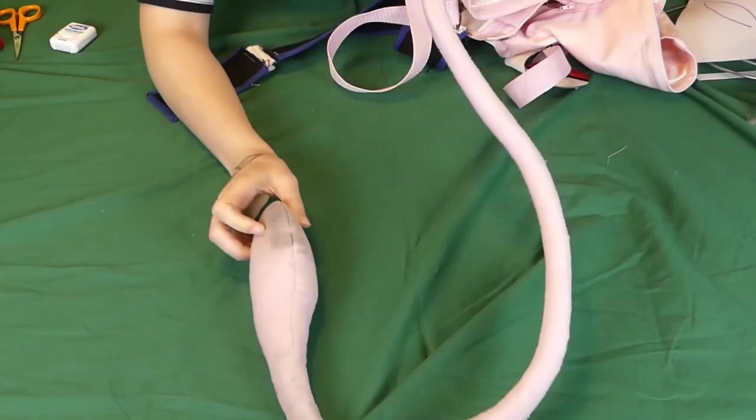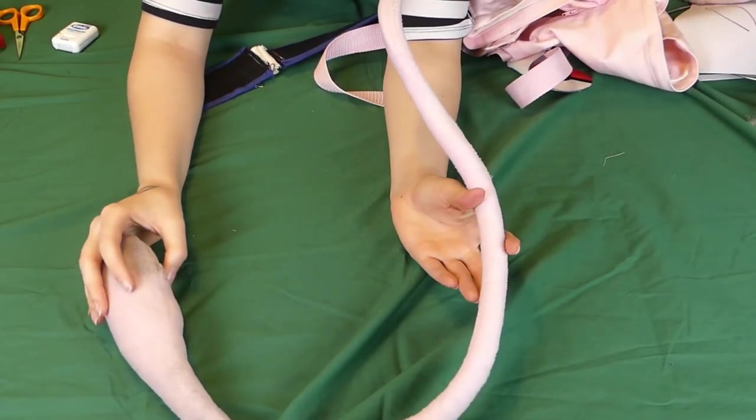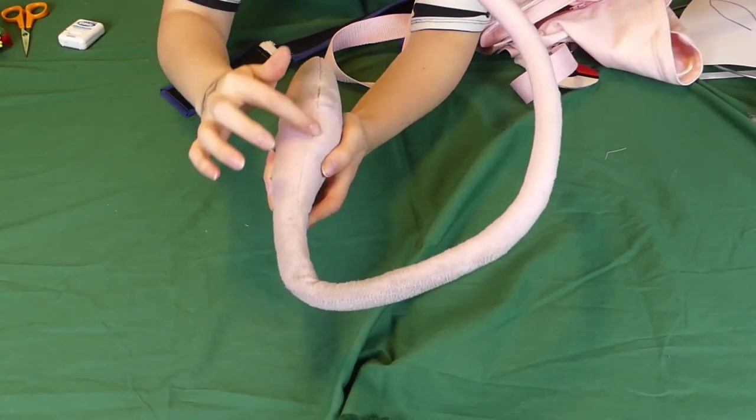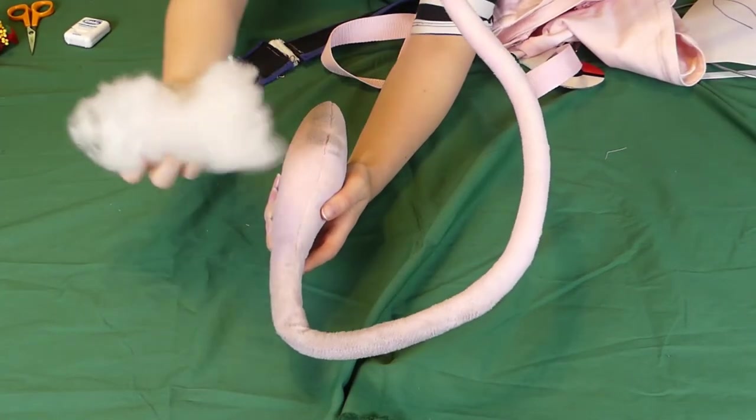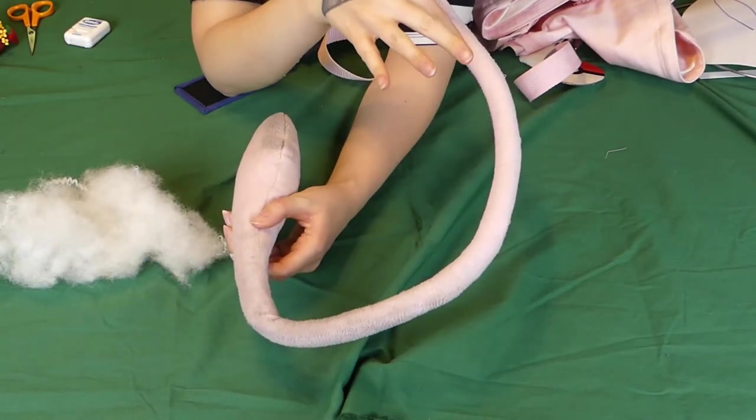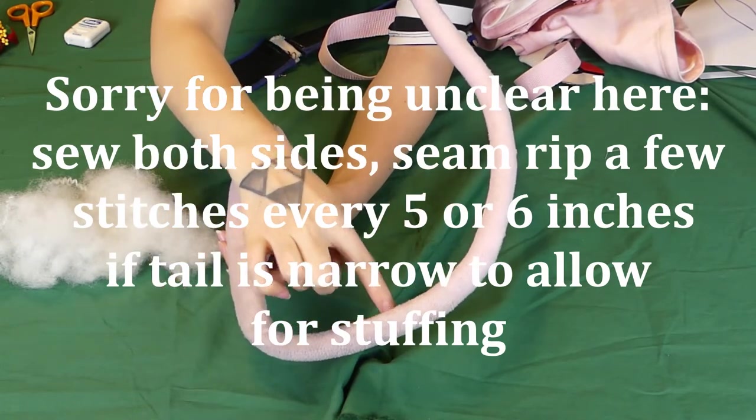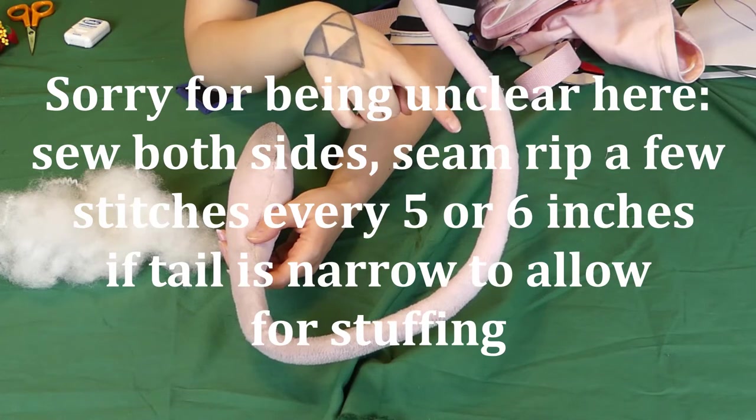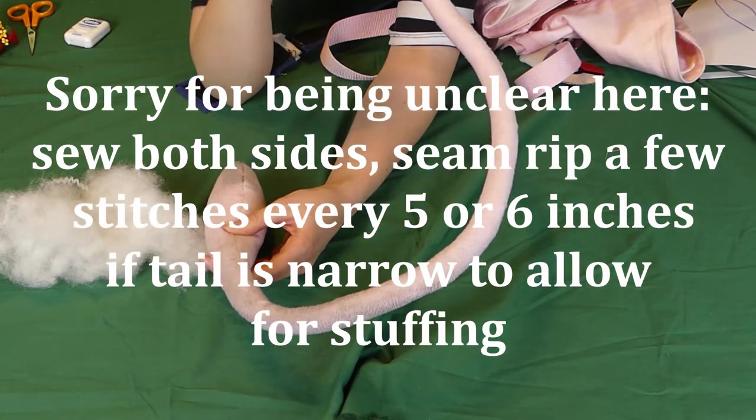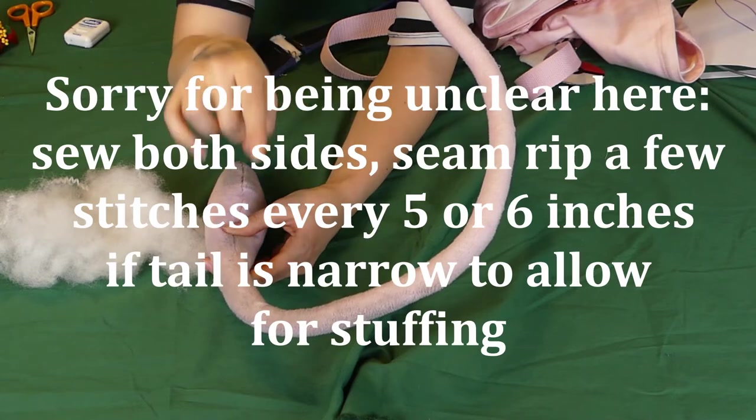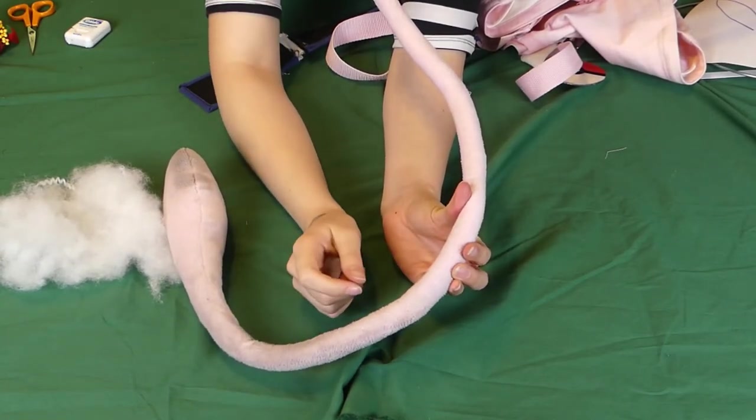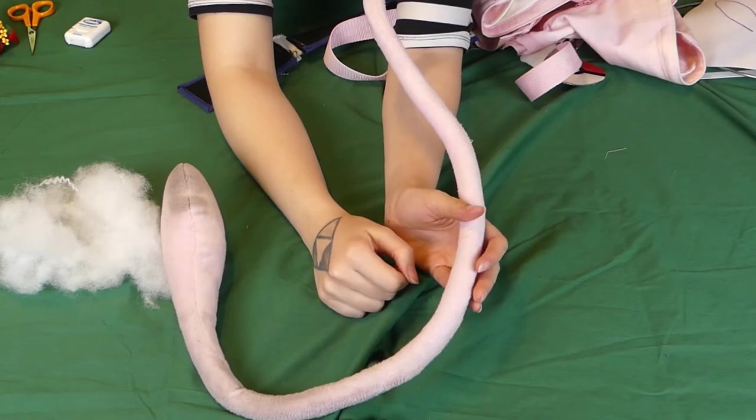You might sew down to about here so that you can stuff the tail with your fiber fill, and then you can sew up the other side. But you need to leave little gaps in your stitching. If it's this thin of a tail, you're going to need to leave those gaps pretty frequently all throughout one side, just little holes so that you can poke the fiber fill in and kind of stuff, and then hand sew up that little gap. Move on to the next gap, stuff and then hand sew up that little gap. And that's how I did this whole tail.